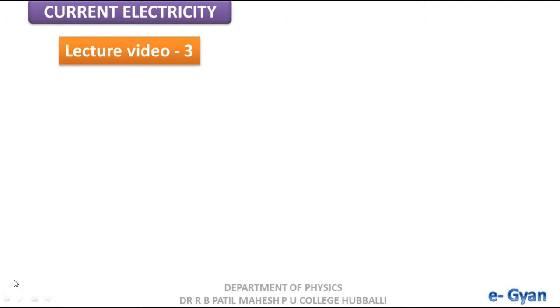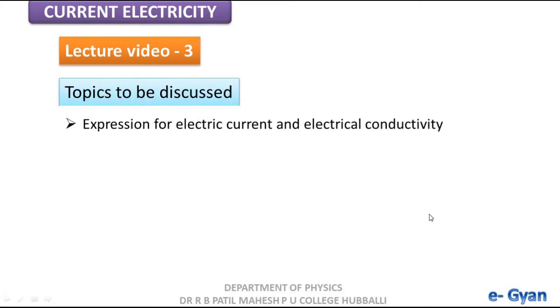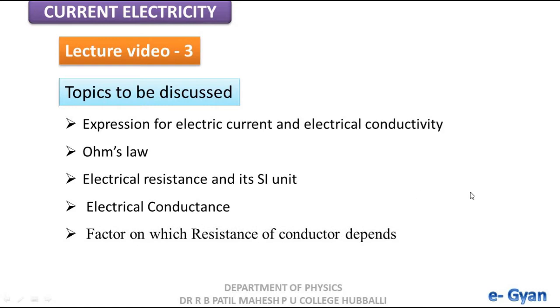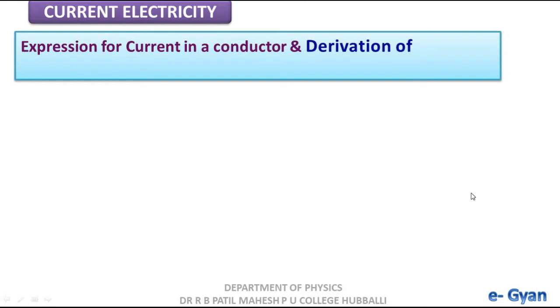Hello students, welcome to lecture three of chapter Current Electricity. In lecture two we discussed drift velocity, relaxation time, mobility and current density. In this lecture we are going to discuss the expression for electric current and electrical conductivity, Ohm's law, electrical resistance and its SI unit, and electrical conductance.